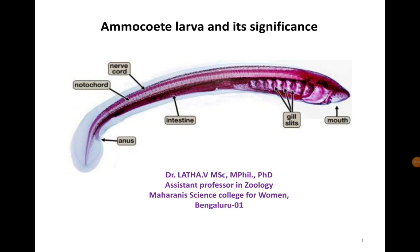In this session we will learn about Ammocoetes larva and its significance. Ammocoetes is a larva of Petromyzon. While discussing the classification of Chordates, it is divided into two divisions: Agnatha and Gnathostomata. Agnathans are the ones without jaws, and Gnathostomata includes all vertebrates with jaws. Ammocoetes larva is a larva of Petromyzon, and Petromyzon falls under Cyclostomata, which is an Agnathan.